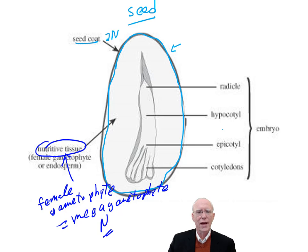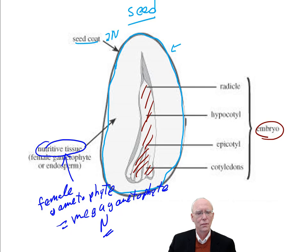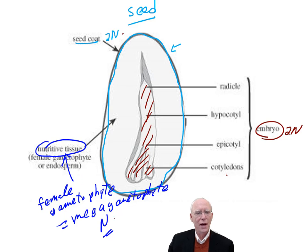On the inside of the megagametophyte, we have the embryo, which is diploid. So the structure of a gymnosperm seed is: diploid seed coat surrounding a haploid megagametophyte surrounding a diploid embryo. Seed coat surrounding megagametophyte surrounding the embryo — that is the structure of a seed in the gymnosperms.